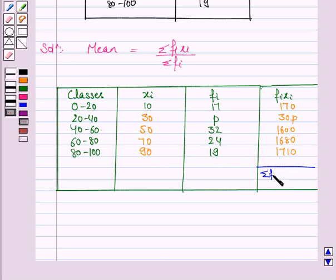Now we find the sum of FI into XI, that is summation FI XI. Now 170 plus 1600 plus 1680 plus 1710 is equal to 5160 plus 30P.